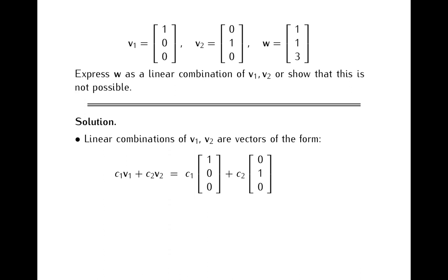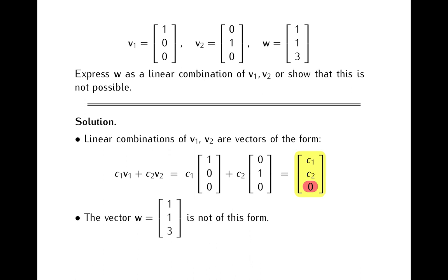When we perform these scalar multiplications and addition, the vector we obtain will have first coordinate c1, second coordinate c2, and third coordinate 0. This is how every linear combination of v1 and v2 looks: its first and second coordinates can be arbitrary numbers, but the last coordinate will always be 0. We see right away that the vector w is not of this form, because its last coordinate is 3. From here we obtain that w is not a linear combination of v1 and v2.